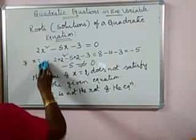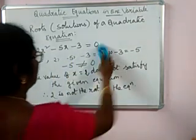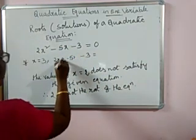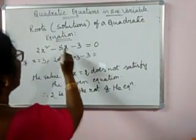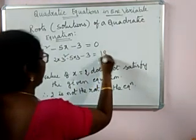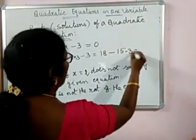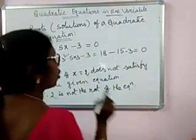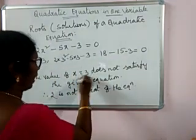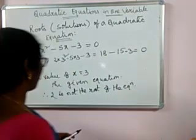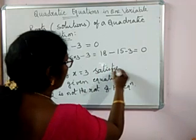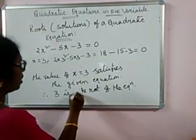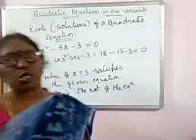Let us take the value of x as 3 and see. Now, if x equal to 3, we will get 2 into 3 square minus 5 into 3 minus 3. 3 square is 9, 2 nines are 18, 5 threes are 15, so 18 minus 15 minus 3 is 0. That means the value of this equals 0. So, the value of x equal to 3 satisfies the given equation. Therefore, 3 is the root of the equation, or solution of the equation.